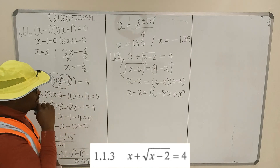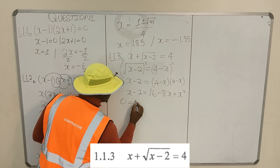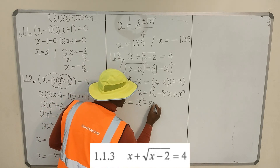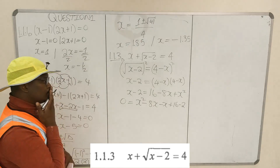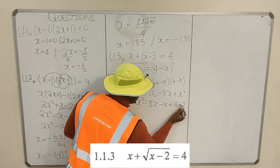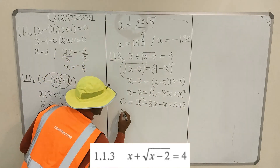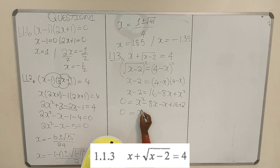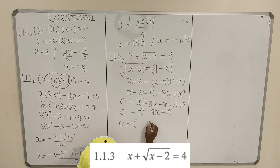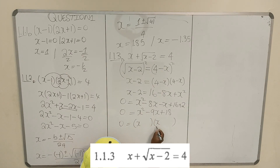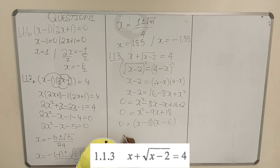Squaring both sides: x minus 2 equals 16 minus 8x plus x squared. Transposing everything to the right-hand side gives 0 equals x squared minus 8x minus x plus 16 minus 2, which simplifies to 0 equals x squared minus 9x plus 18. Factorizing: 0 equals (x minus 3)(x minus 6), so x equals 3 or x equals 6.